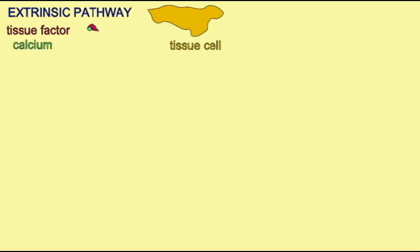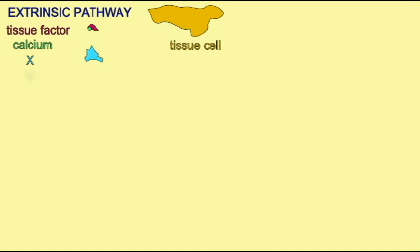In what is known as the extrinsic pathway, the events which start off this cascade occur outside the blood vessel, because signals are released from damaged cells inside the tissues. So this may initiate coagulation.